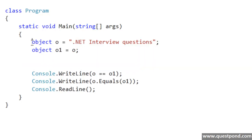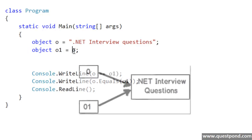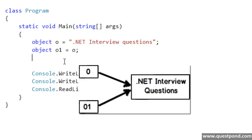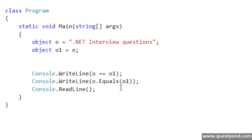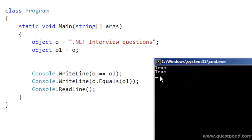Here is a simple example on the screen. I have created a simple object called O and pointed it towards a content called .NET InterviewQuestions. Then in the next line I am creating one more object O1 and passing this O reference to O1. What will happen internally is both O and O1 will point towards the same reference and they will also have the same content. So both the equal to equal to comparison and the dot equals method should give us true. If we do a Ctrl+F5 we can see it is returning true for both comparisons.